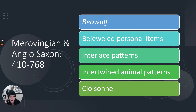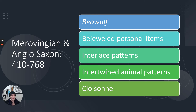They weren't — they all had their own culture and lots of things going on. We're going to learn a little bit more about some of these people. One of the groups we're going to look at are the Moravian and Anglo-Saxon people. From them we have the great literary work Beowulf, bejeweled personal items, interlaced patterns, intertwined animal patterns, and cloisonné.